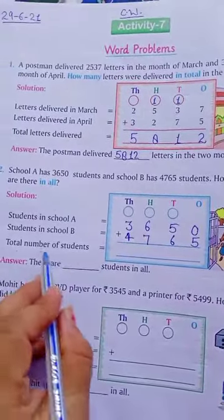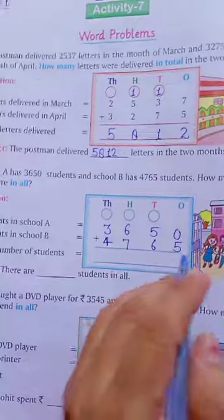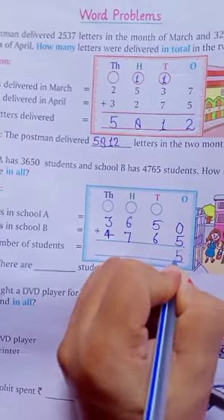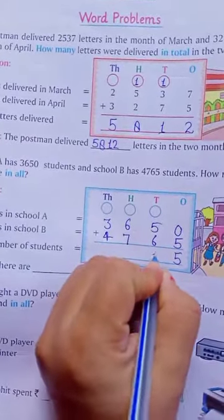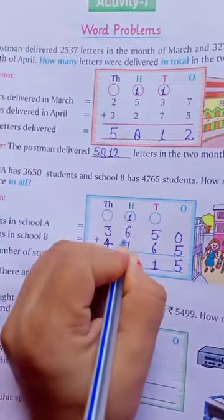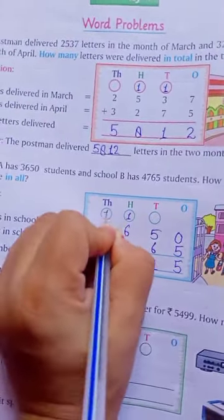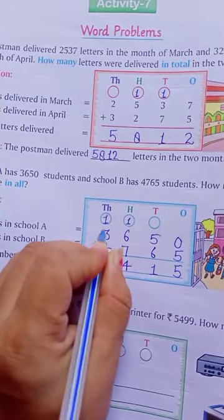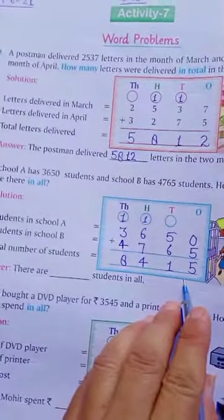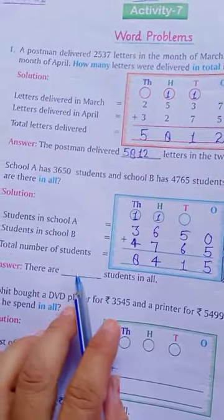Total number of students. For total number of students, we add our numbers. 0 plus 5 is 5. 5 plus 6 is 11, write 1. 1 carry 6 plus 1, 7 plus 7, 14, write 4. 1 carry 4 plus 3, 7 plus 1, 8. That means 8,415 students in all.